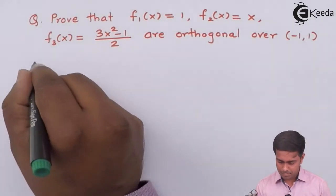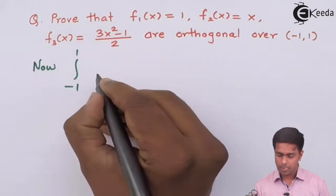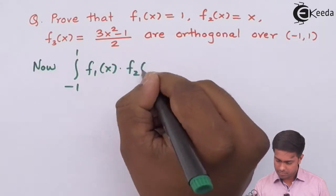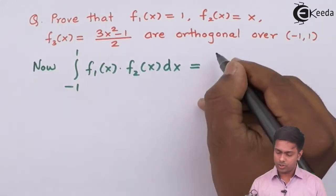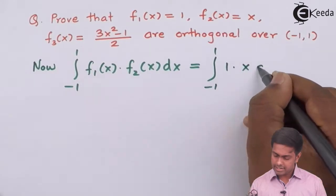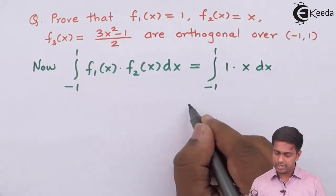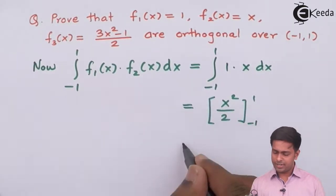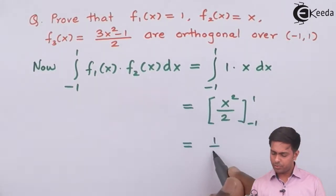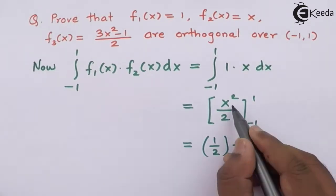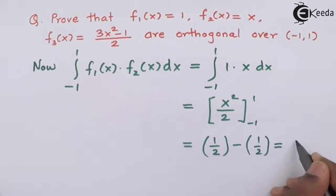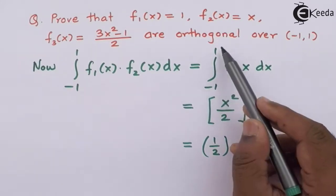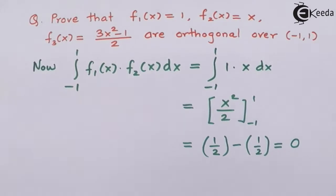Let's start. The integral from −1 to 1 of f1(x)·f2(x) equals the integral from −1 to 1 of 1·x dx. Integration of x is x²/2, evaluated from −1 to 1. Putting upper limit gives 1/2, minus putting lower limit −1 gives (−1)²/2 = 1/2, so the answer is 0. Also, since the range is from −a to a and x is an odd function, by the property of integration the result is 0. So the first condition is proved.